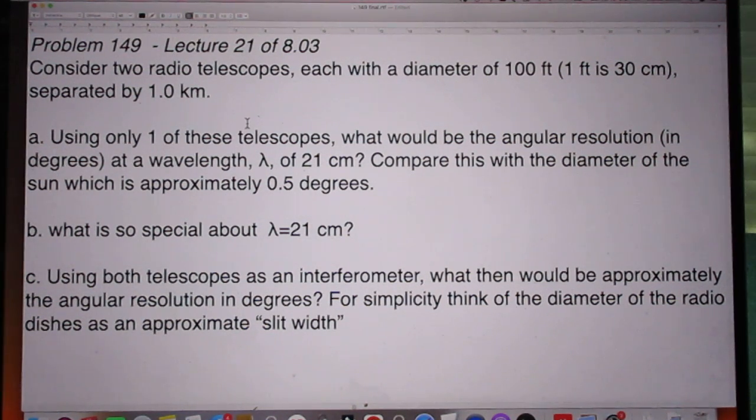First question. Using only one of these telescopes, what would be the angular resolution in degrees at a wavelength lambda of 21 centimeters? And compare this with the diameter of the Sun, which is approximately half a degree.